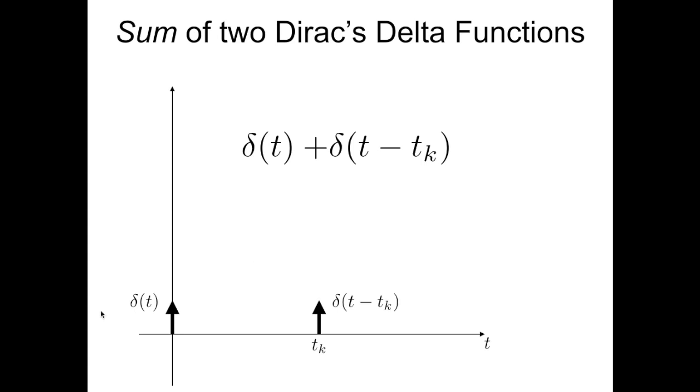Why is this the case? Well, because both functions are zero everywhere. So unless they are overlapping - unless this second Dirac delta is positioned exactly at this point, and this is not the case because t_k is positive and non-zero...